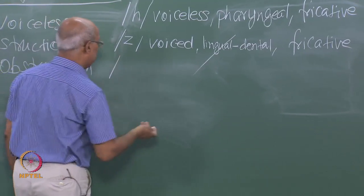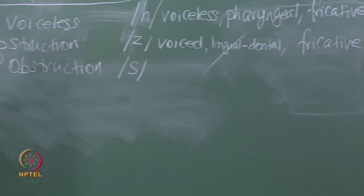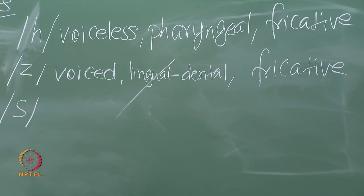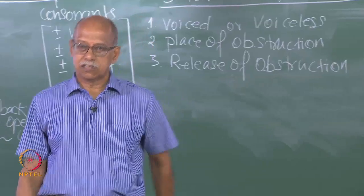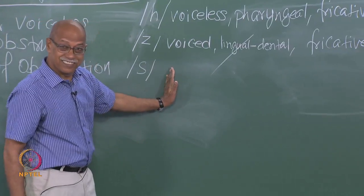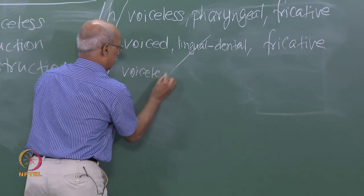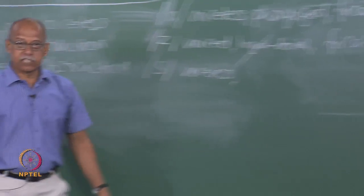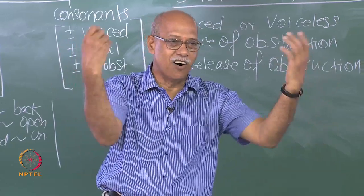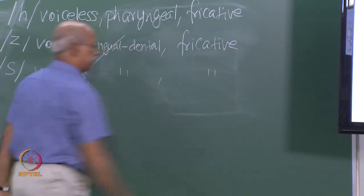Let us take one more and then we will stop. What is this sound? Is it voiced or voiceless? Voiceless. Where is the place of obstruction? Dental — same place as Z. The only difference is it is voiceless and not fricative.